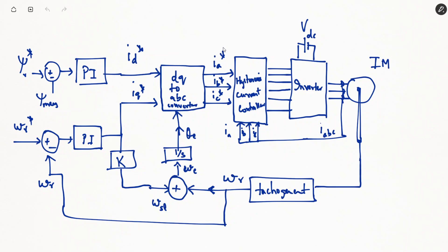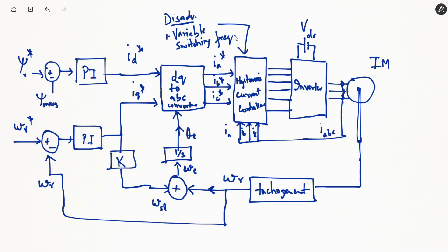One disadvantage of this indirect vector control scheme is that the hysteresis current controller produces variable switching frequency, which causes some ripple in current and torque. However, we can use other modulation strategies such as space vector modulation or pulse width modulation within the indirect vector control strategy to avoid the use of a hysteresis current controller for pulse generation. This is the basic operation of an indirect vector control strategy.